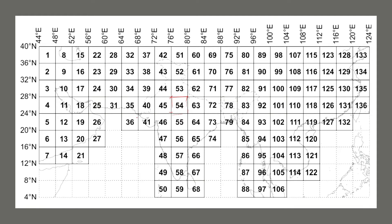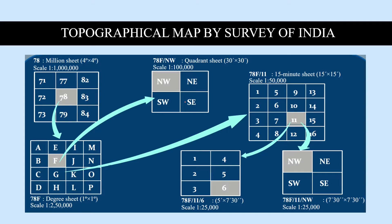The Survey of India divides the 54 block and other blocks into different parts to represent the Earth's surface clearly. This is the method they use — map sheet numbering using scale and degree values. For a 4 degree by 4 degree block, the scale is 1:4,000,000, meaning the 4-degree block contains a 1:4,000,000 scale.